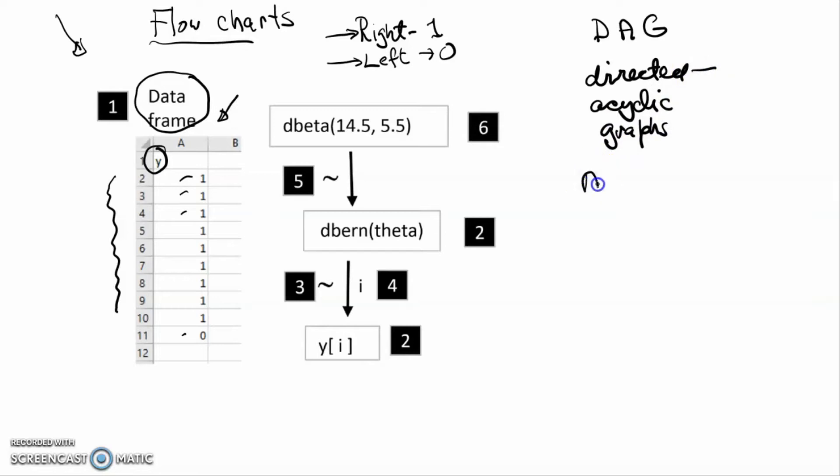Directed means that there's arrows involved. We've got some sort of factor A goes to B, might also go to C, B can go to C. So directed by virtue of arrows.